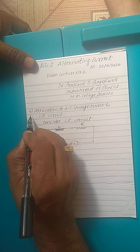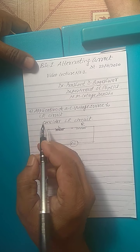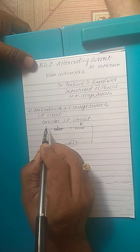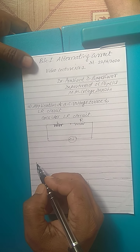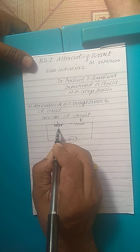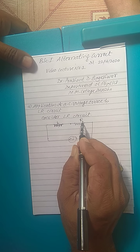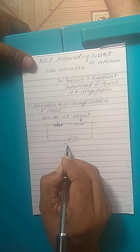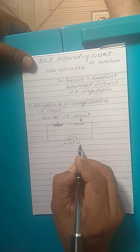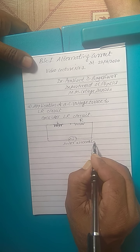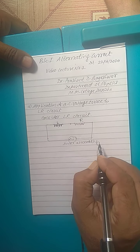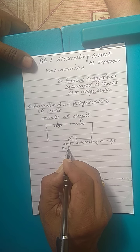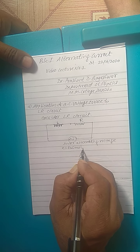We see the fourth circuit: application of AC voltage source to LR circuit. Consider the LR circuit. This is an inductor of inductance L and a resistor of resistance R, connected in series with the source of alternating voltage. Suppose E equals E₀ sine of omega t.